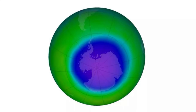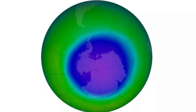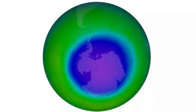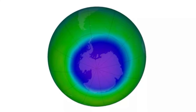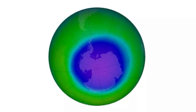The ozone hole is the largest it's been since 2015, but overall it's still decreasing. The ozone hole that forms yearly over Antarctica has grown for the third year in a row. At nearly 10 million square miles — 26.4 million square kilometers — the ozone hole is the largest it's been since 2015. But despite that growth, scientists say that the hole size is still on a downward trend overall.